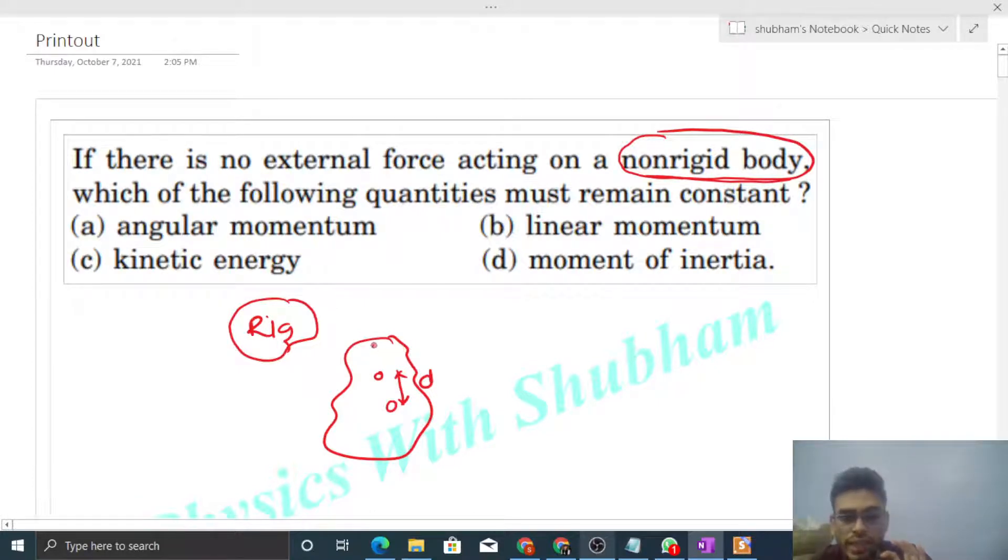Now what is a non-rigid body? If the distance or the separation between the two particles of a body can change and relative motion can happen between two particles in a body, then that is a non-rigid body.